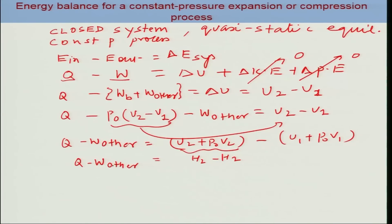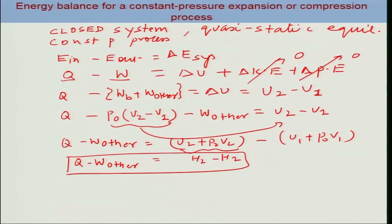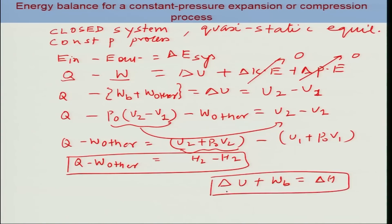So this is the energy balance expression for the case of constant pressure expansion or compression: the boundary work plus delta U equals delta H. This result — that delta U plus boundary work equals change in enthalpy — is only true for a constant pressure expansion or compression process.